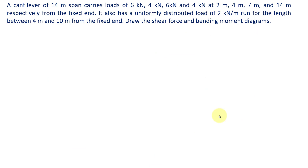Let me read the problem. A cantilever of 14 meter span carries loads of 6 kN, 4 kN, 6 kN and 4 kN at 2 meter, 4 meter, 7 meter and 14 meter respectively from the fixed end. It also has a uniformly distributed load of 2 kN per meter run for the length between 4 meter and 10 meter from the fixed end.